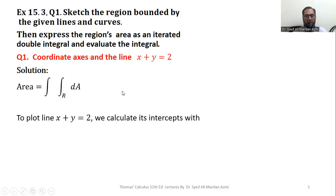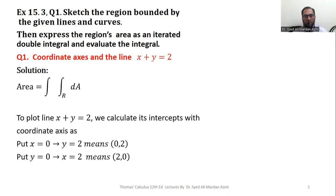In order to plot this line we can calculate its intercepts with coordinate axes. We can put x equal to 0 in this equation, we will get y equal to 2, so we will get a point (0,2). Similarly we can put y equal to 0 and we get x equal to 2, giving us the point (2,0). So these are the points at which this line intersects our coordinate axes.